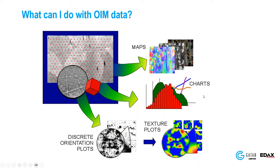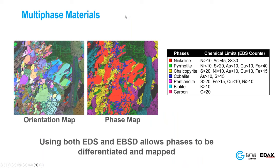Here's a map of a rock with quite a few different minerals in it. We used EDS and EBSD together to find the arrangement of phases in the material. On the right, colors represent the different phases — seven different phases total. On the left, we see the orientation, with each phase having a different color triangle.